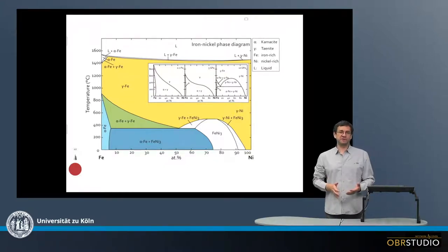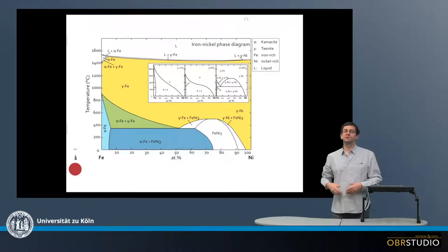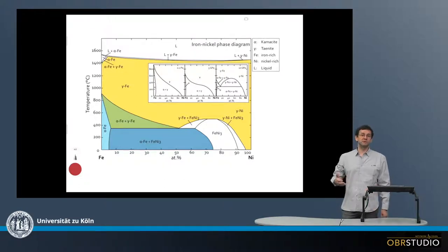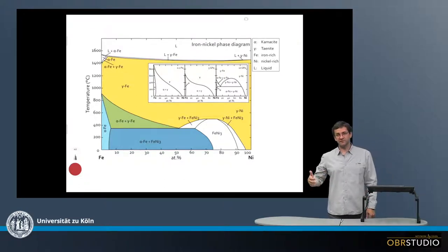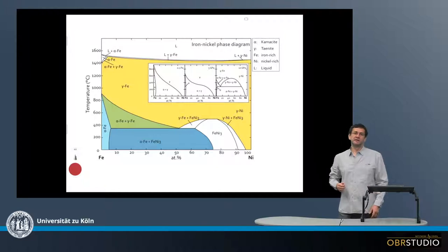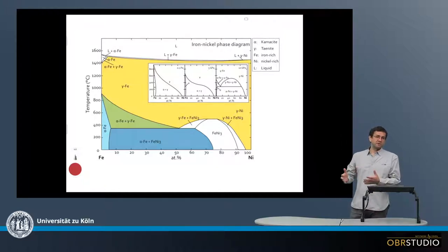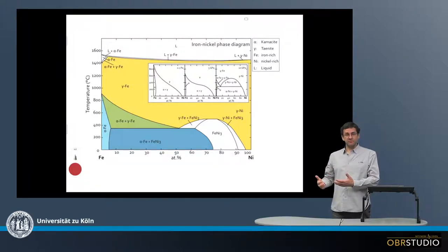Iron and nickel are the two most abundant siderophile elements. Iron is also among the most abundant elements together with magnesium, silicon, and oxygen. Iron is about an order of magnitude more abundant than nickel, more precisely 15 to 16 times more abundant.